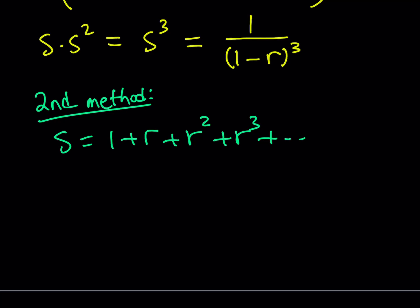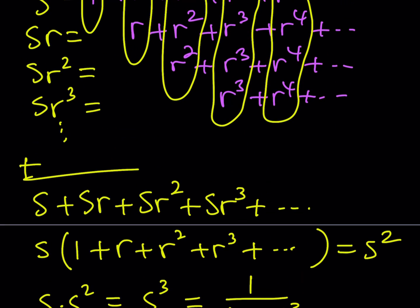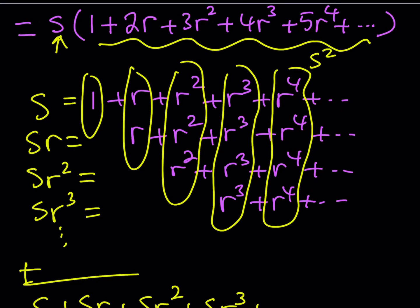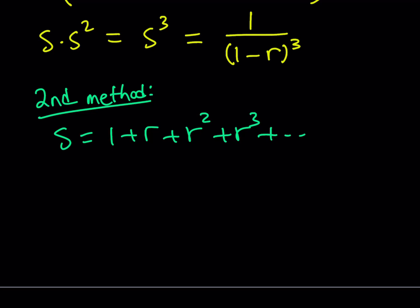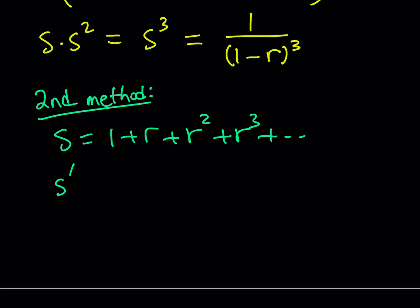The sum I'm trying to evaluate looks like 1 plus 2r plus 3r². What does that remind you? Look at the numbers — I do have 3, which is one more than 2. That should remind you of the power rule. The derivative! So if I do the derivative of S with respect to r, using a little bit of calculus, you're going to get: the derivative of 1 is zero, the derivative of r is 1, then you get 2r, then you get 3r², and so on. Exactly — that's what you're getting.